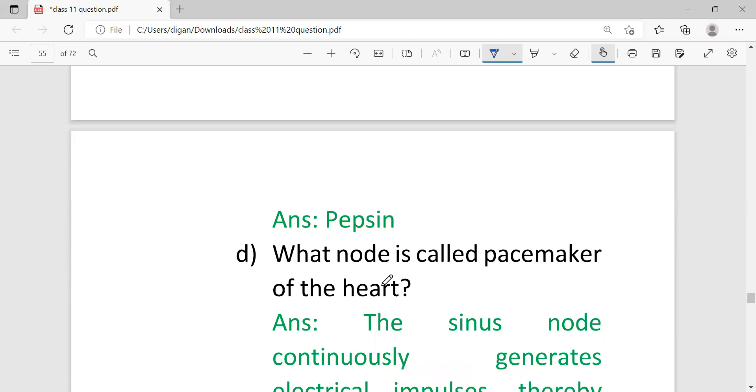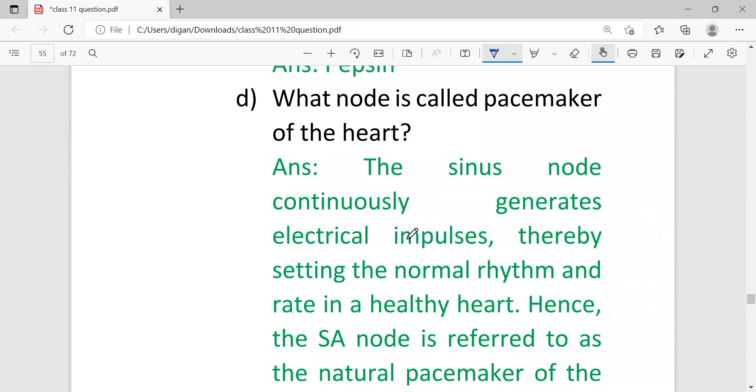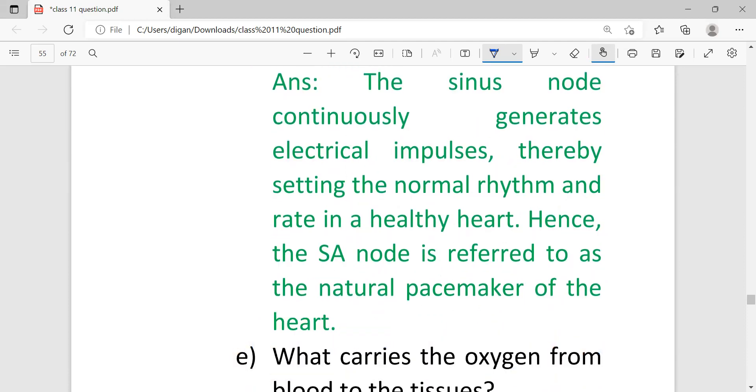In the heart there are two types of nodes: one is AV node, another is SA node. If the question asks why SA node is called pacemaker of heart, the answer is: the sinus node continuously generates electrical impulses, thereby setting the normal rhythm and rate in a healthy heart. Hence the SA node is referred to as the natural pacemaker of the heart.